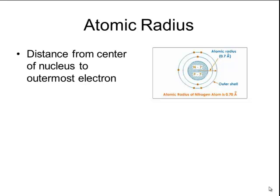Remember from our Chapter 3 screencasts that the atomic radius is the distance from the center of the nucleus to the outermost electron. If you measure the atomic radius of all the different elements on the periodic table, you'll find that there's a pattern in their size as you move across the periodic table as well as down the groups.